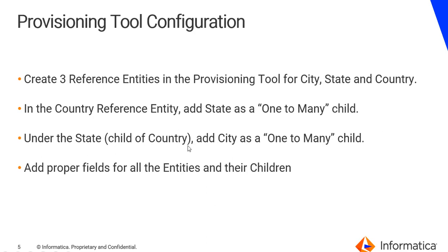That's it for the hub console configuration. Now we'll go into the provisioning tool configuration. First I need to create three reference entities in the provisioning tool for city, state and country respectively. In the country reference entity, I'm going to add state as a one-to-many child and under this state, I'm going to create a city one-to-many child.